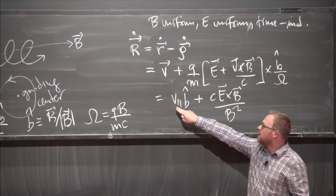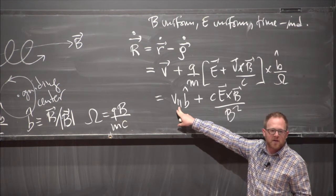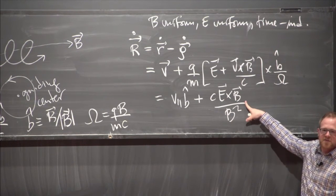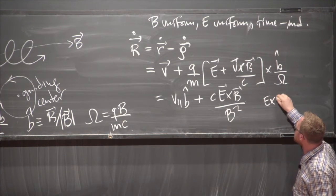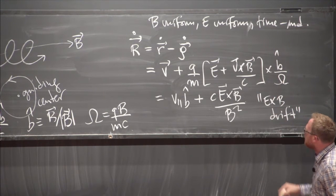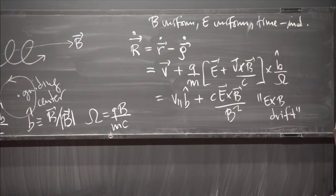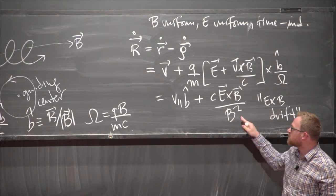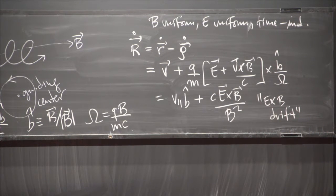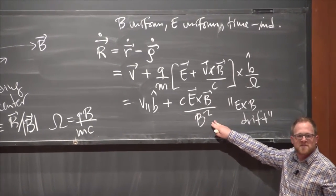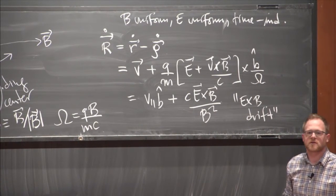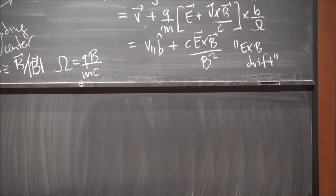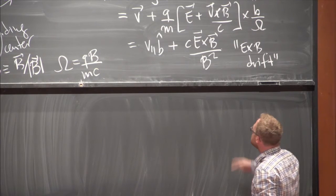The guiding center streams parallel to the magnetic field at some velocity, and interestingly it drifts across the magnetic field with an E×B drift. This E×B drift is what underlies MHD—all particles, independent of their species (there's no charge or mass in the drift formula), are E×B drifting together. This is what underlies MHD: the flow is ordered with the sound speed, which is what gives you Alfvén waves.